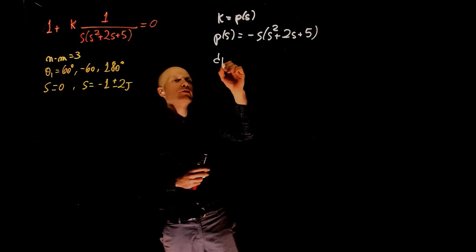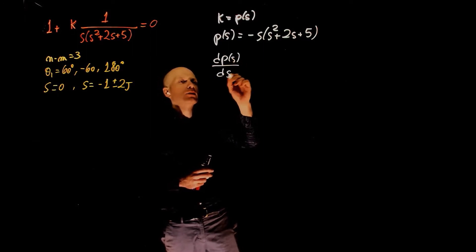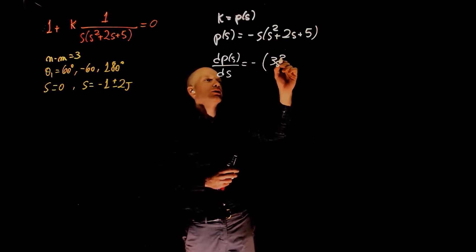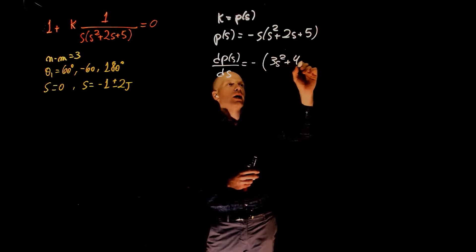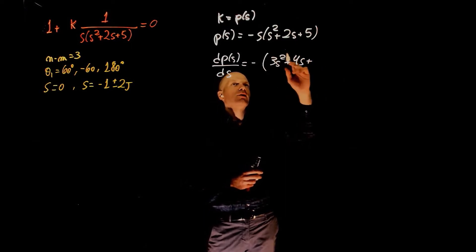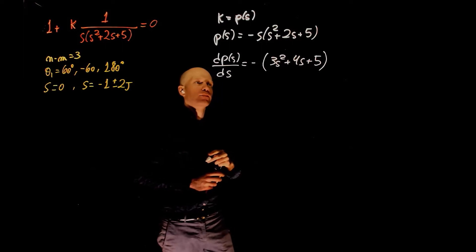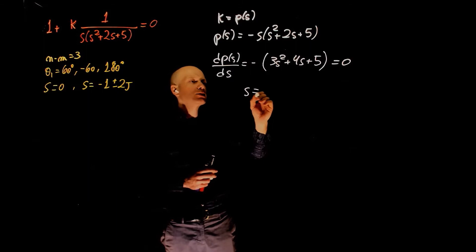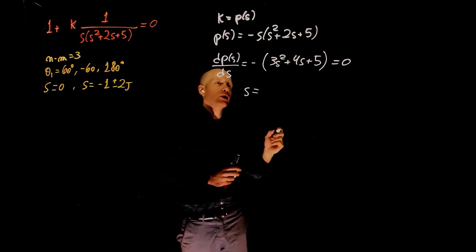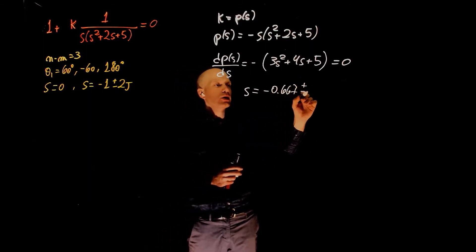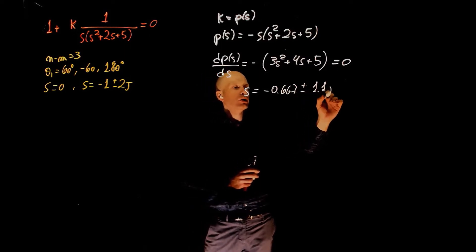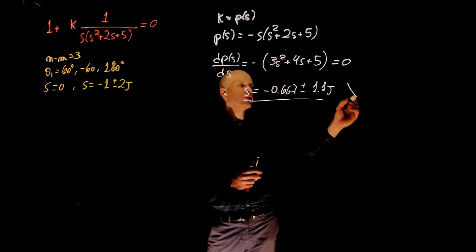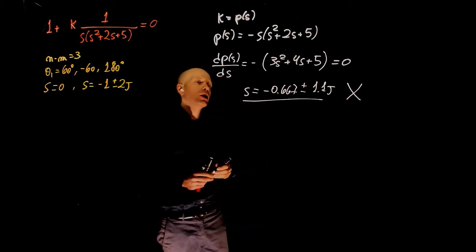Taking the derivative of p of s with respect to s gives 3s squared plus 4s plus 5. We now equate this to 0 and solve for the values of s. S will be negative 0.667 plus minus 1.1j. This is a complex number. We can conclude that there is no breakaway or breaking point.